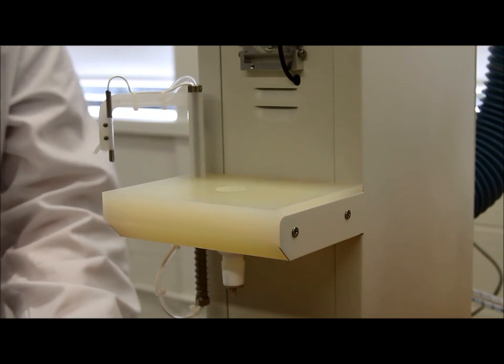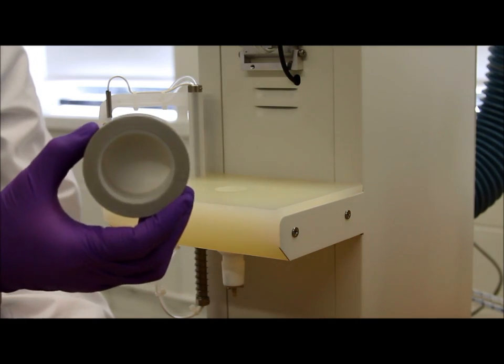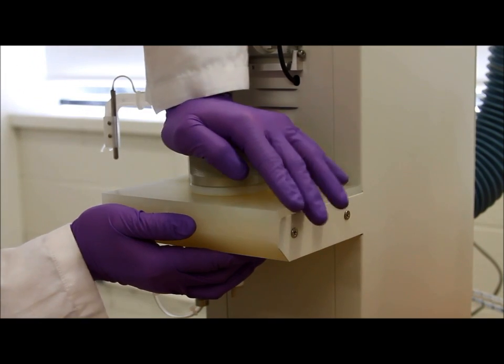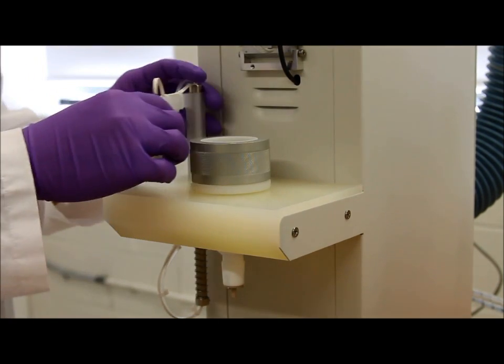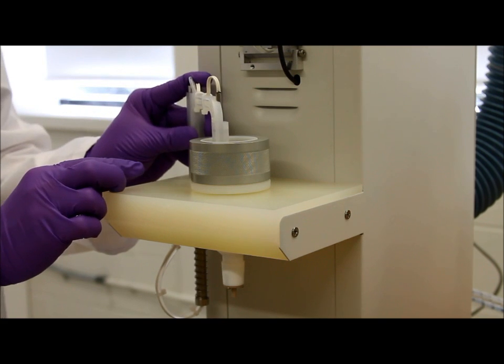To begin your method and assemble the apparatus, grab your disc holder with your SPE disc inside and place it on the disc holding platform. Grab the pre-wet arm and lift it up and place it into your disc holder.